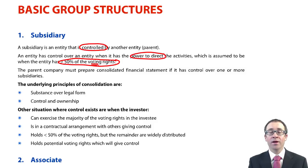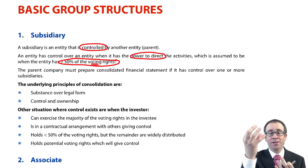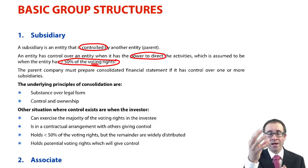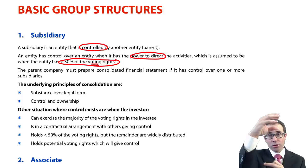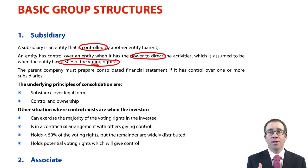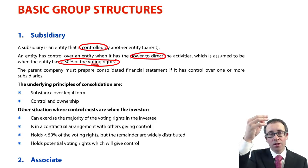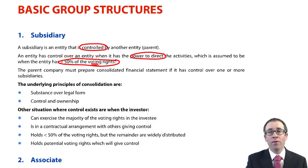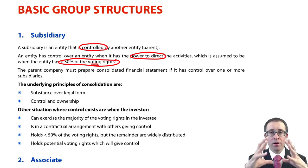If that's the case, we looked at the concept of substance over legal form. The parent and the subsidiary are two separate legal entities — they have their own certificates of incorporation. But because the parent has control over that subsidiary, we treat them as one group entity. Remember, you cannot sue a group — you have to sue the individual entity. We are accounting for the economic reality: the parent shareholders own 100% of the parent, but they also have control over that subsidiary. So in effect, they have ownership of that subsidiary, making it one big group of companies.